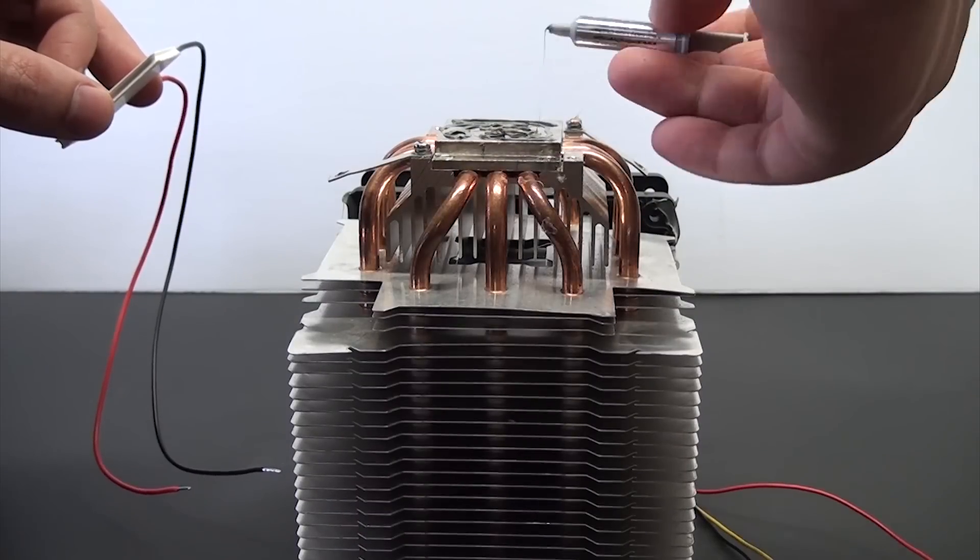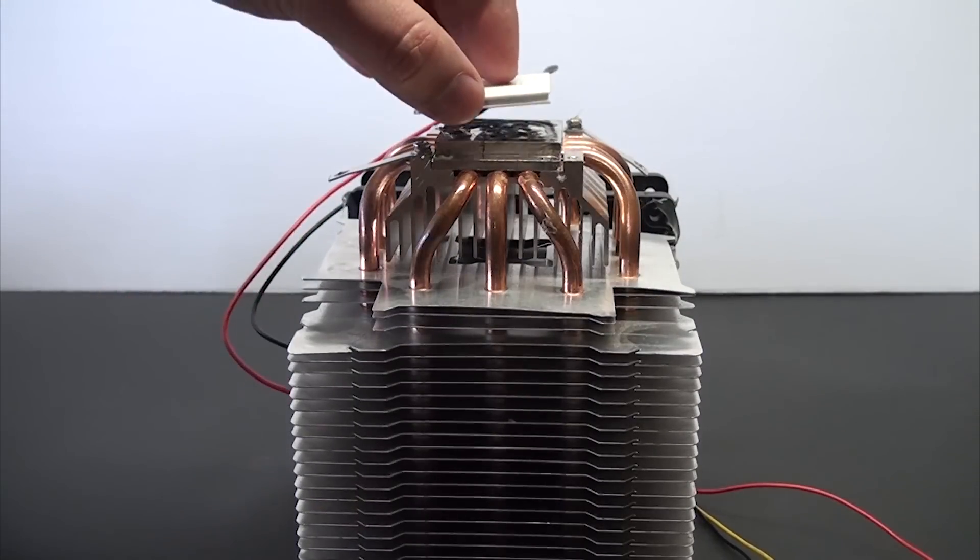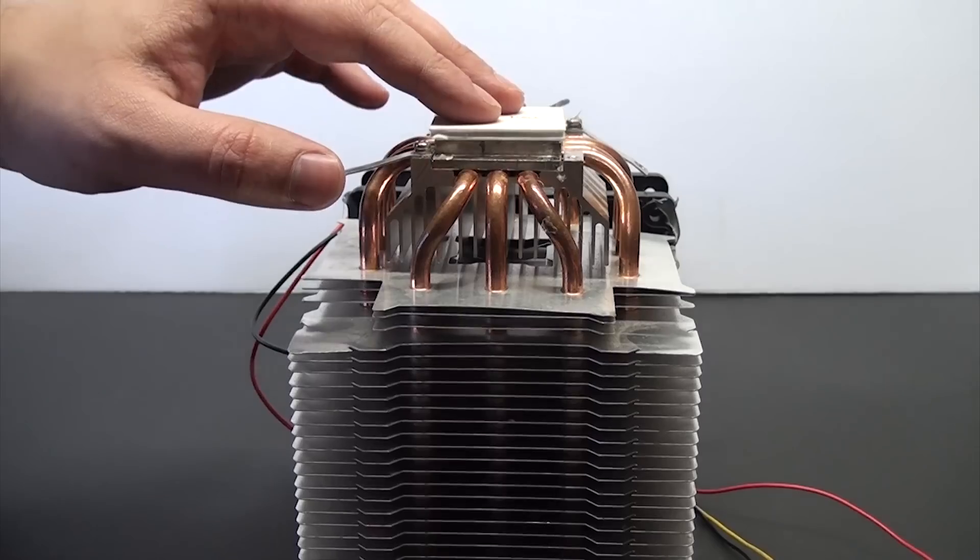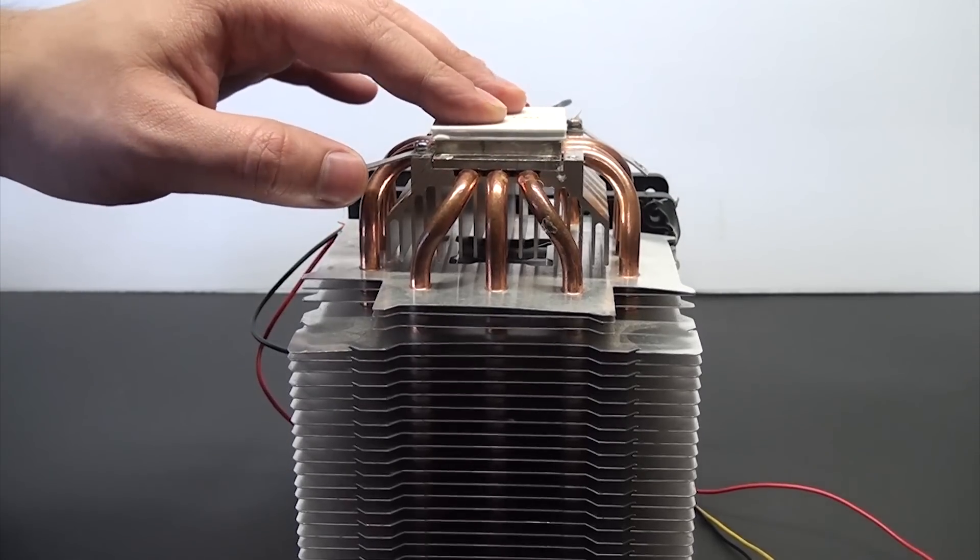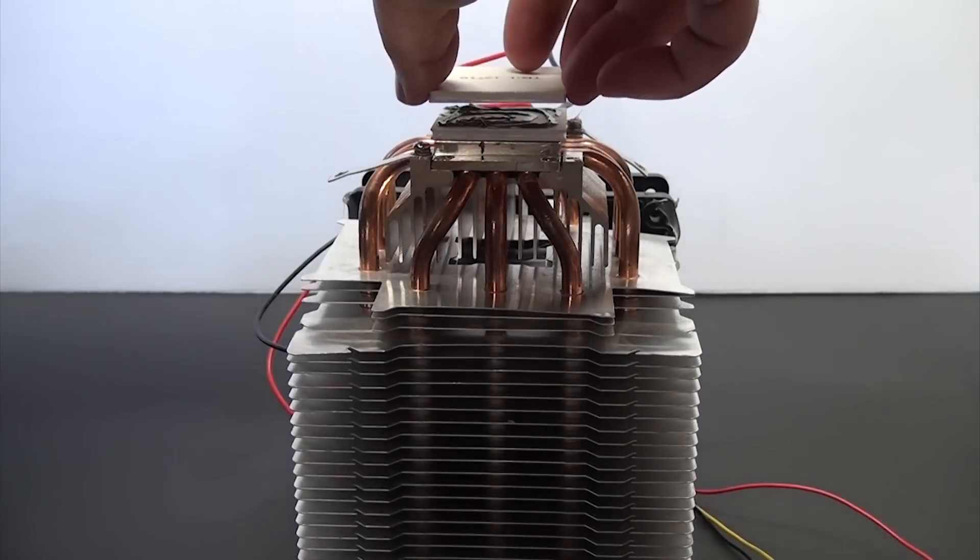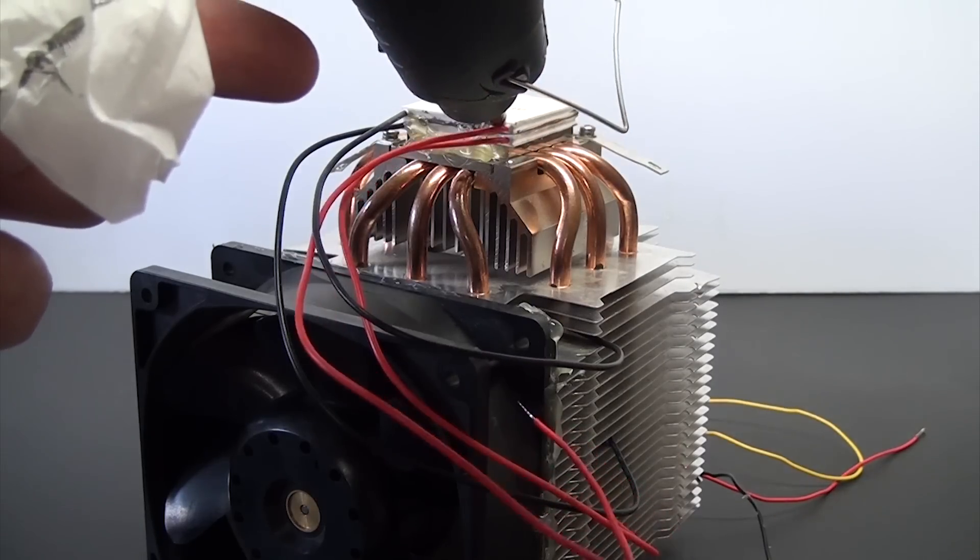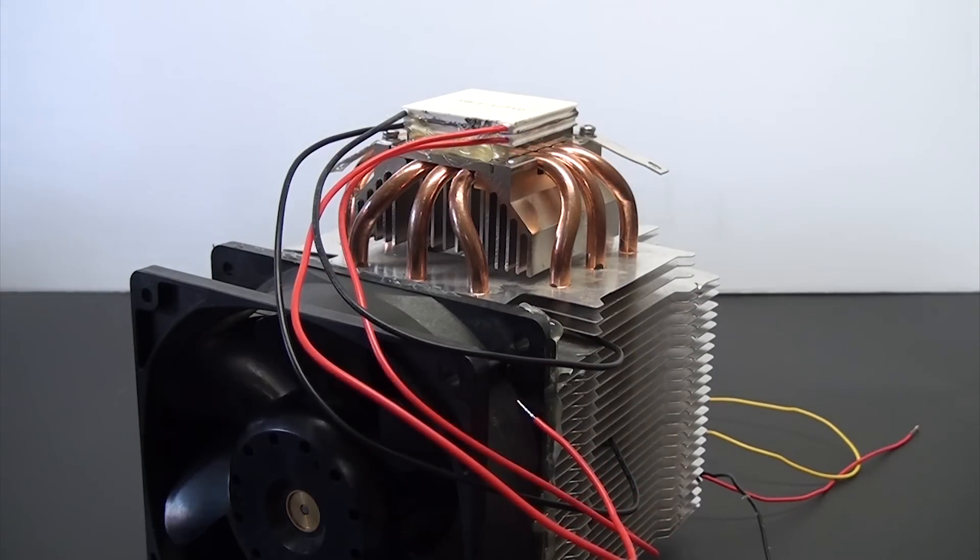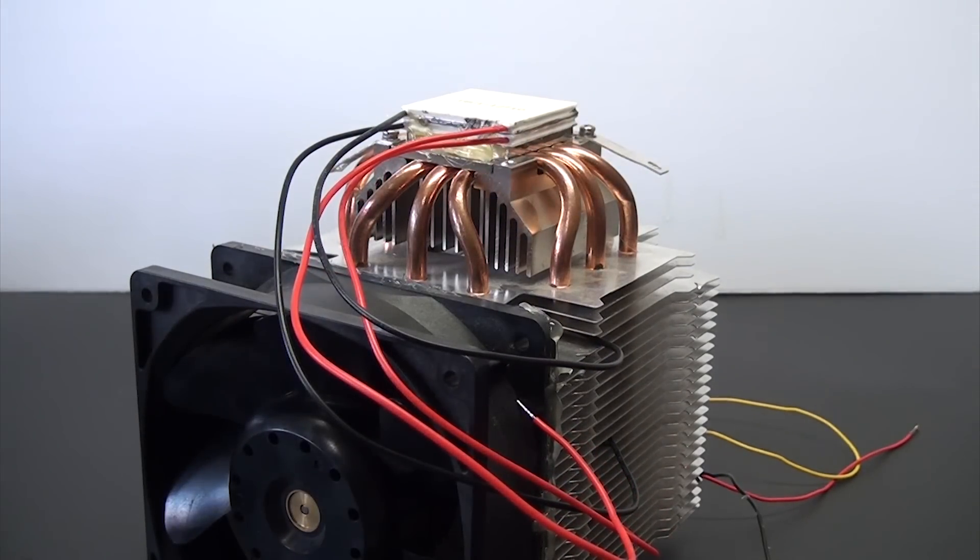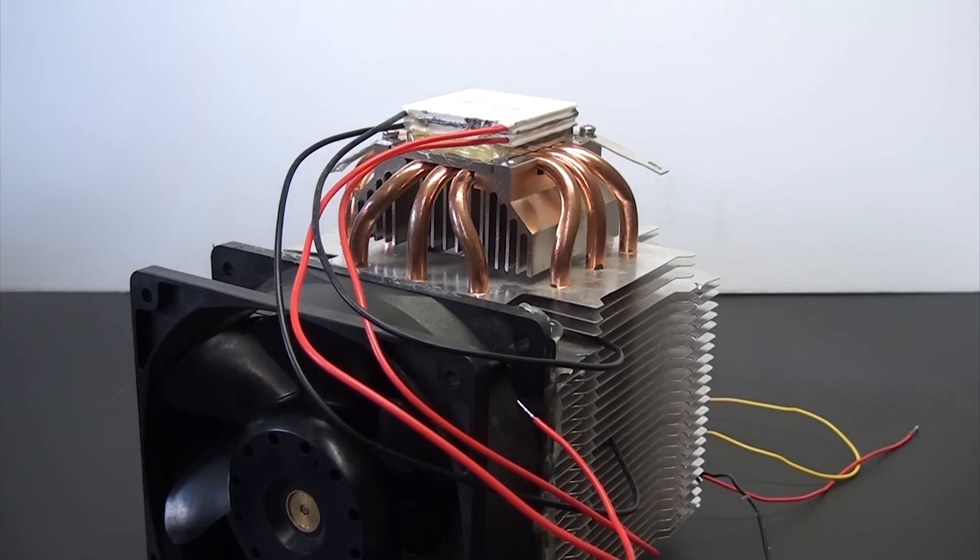To get things going, I'm using some silver-based thermal compound between each Peltier layer. Don't be stingy with this stuff, you need a good layer to get full contact between the Peltiers, and the better job you do, the better this'll work. Then to lock things in place, I used a little bit of hot glue to seal things in. This is really only there to hold things in place until the whole machine is assembled, as the thermal compound makes the Peltiers pretty slippery and they tend to move around.